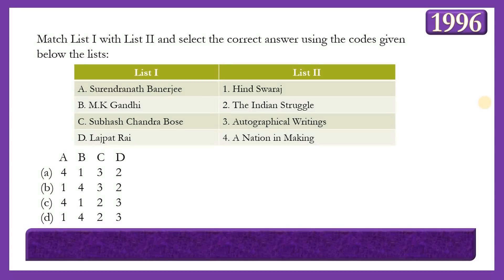Next matching question: Match authors with their books. List 1: Surendranath Banerjee, M.K. Gandhi, Subhash Chandra Bose, Lala Lajpat Rai. List 2: Hind Swaraj, The Indian Struggle, Autobiographical Writings, A Nation in Making. The answer is option C — 4, 1, 2, 3 — meaning Surendranath Banerjee wrote A Nation in Making; M.K. Gandhi wrote Hind Swaraj; Subhash Chandra Bose wrote The Indian Struggle; and Lala Lajpat Rai wrote Autobiographical Writings.